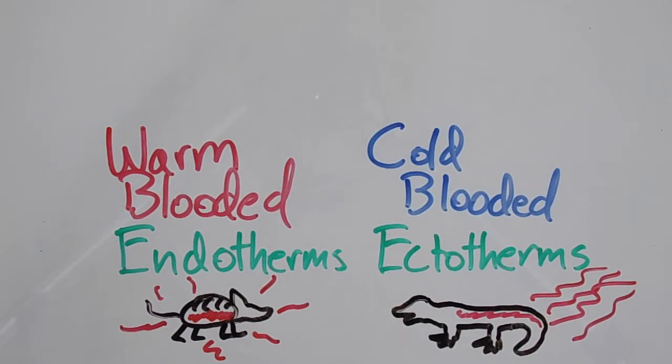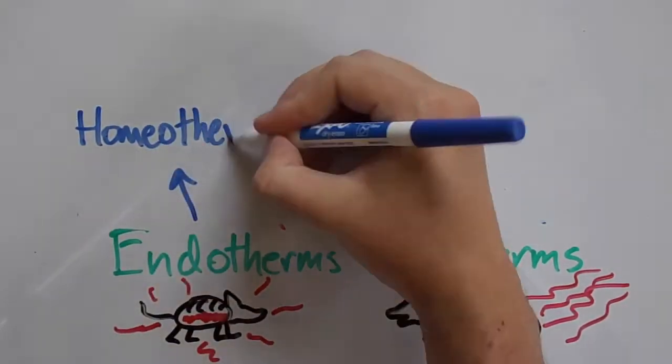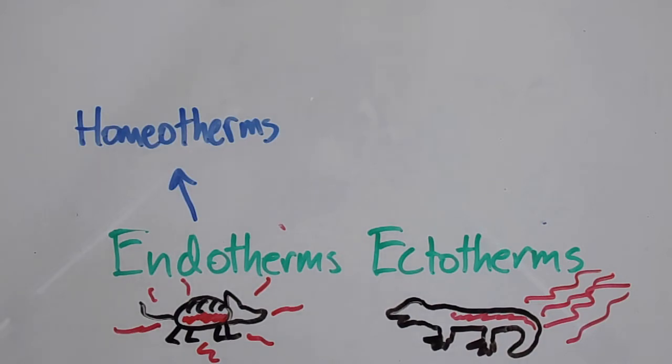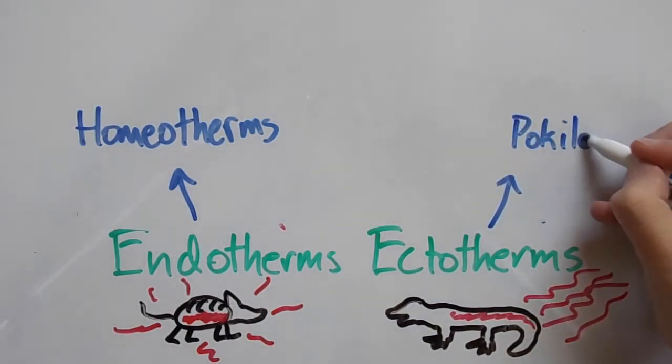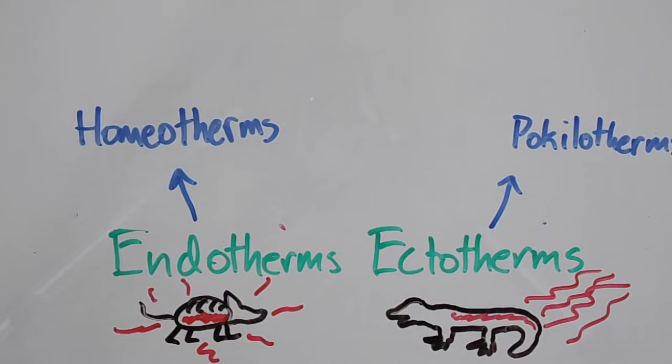The other important terms are homeotherms, heterotherms, and poikilotherms. Homeotherms are generally endotherms, in that their body temperature stays constant. And poikilotherms are generally ectotherms, in that their body temperature frequently fluctuates. These correlations aren't exact, though, as we will soon find out.